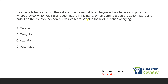Lorraine tells her son to put the forks on the dinner table, so he grabs the utensils and puts them where they go while holding an action figure in his hand. When Lorraine grabs the action figure and puts it on the counter, her son bursts into tears. What is the likely function of crying? When identifying functions — escape, tangible, attention, automatic — we're looking for antecedents and consequences. Typically consequences tell you the most, but antecedents help. What happens before the crying? What happens after?